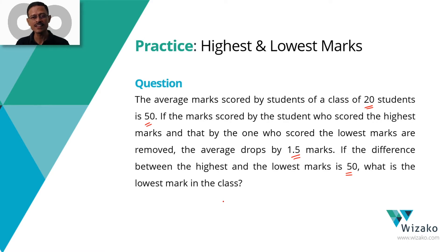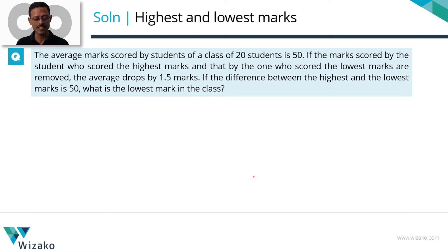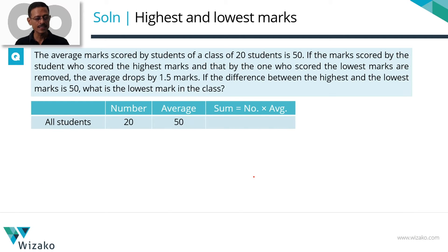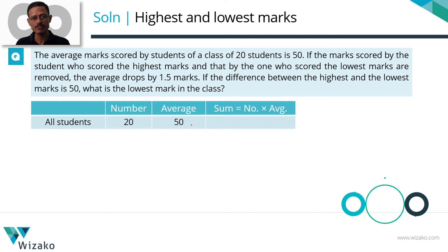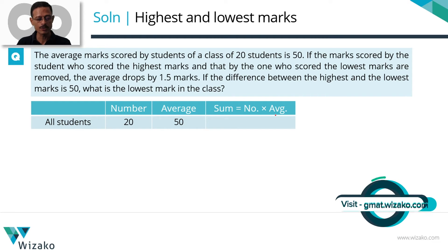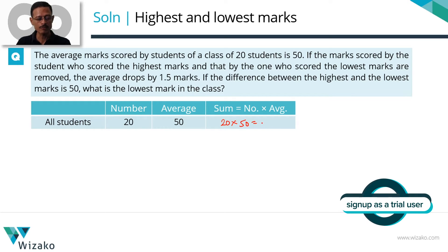Let's get started. We are going to set it up in the standard framework, which has three columns: number, average, and sum. Initially there were 20 students in the class, and the average marks scored by all 20 is equal to 50. So the sum of their marks is equal to 20 into 50, which is equal to 1000.